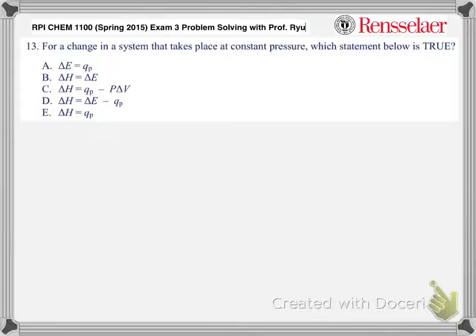Okay, so for a change in a system that takes place at constant pressure, which statement is true? This is sort of about the notation, how you understand the notation. When you say heat at constant pressure, that's a subscript of P, and in this case that's an enthalpy change.